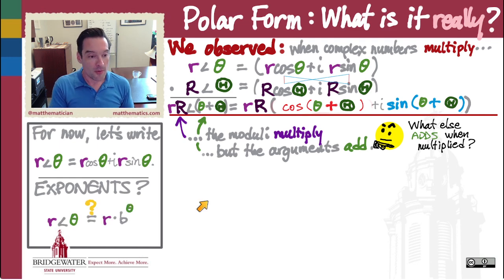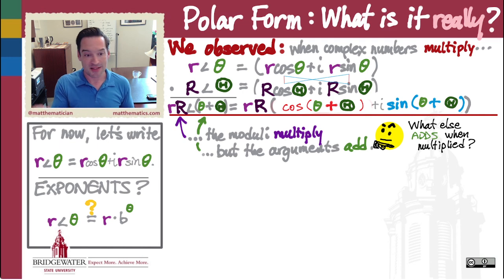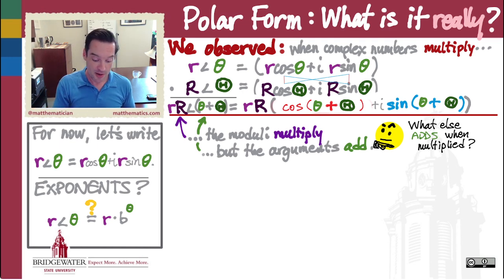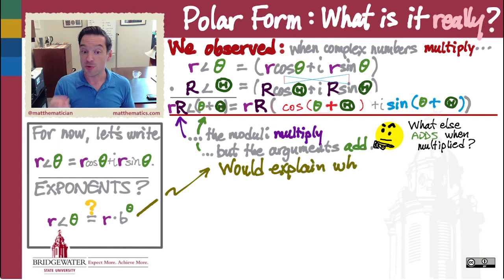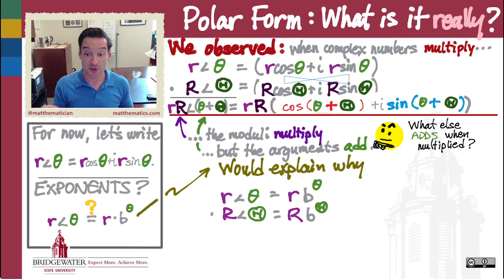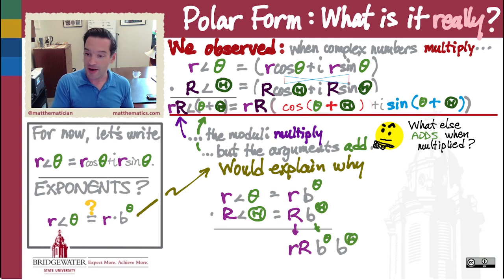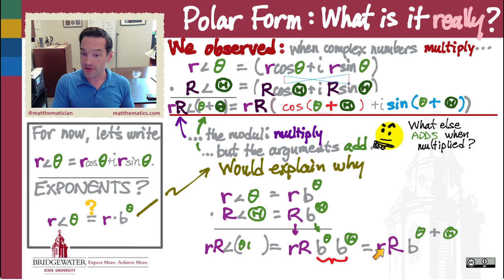So here's what we guess. Because the arguments add, we're going to put θ as an exponent with some base b — we don't know what that base is, that's the subject of the next video. Since the moduli multiply, the r's are probably not part of the exponent; they're probably a coefficient in front of the base. So when I multiply two complex numbers expressed as r·b^θ and R·b^Θ, the little r and big R multiply together, and little θ and big Θ add — giving rR∠(θ + Θ).